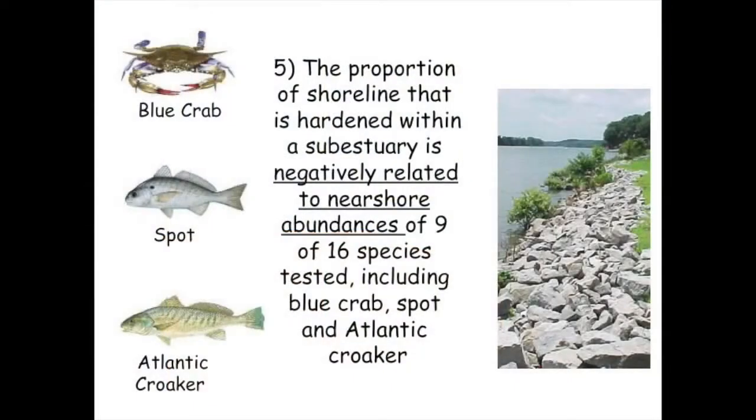We actually had a stronger effect of shoreline hardening — a stronger negative effect of shoreline hardening than we did of cropland. Again, nine out of the sixteen species were negatively related to the amount of hardened shoreline in the sub-estuary, so it was a much more universal response than agriculture. Just using these same three species — blue crab, spot, and croaker — as an example: I'm showing the univariate relationships, but we developed some multivariate models that predicted a very high percentage of the among-sub-estuary variation. The abundance of blue crab, spot, croaker, and quite a few other species declined as the amount of shoreline hardening in the sub-estuary increased, and that shoreline hardening was associated with the amount of developed land in the watershed.